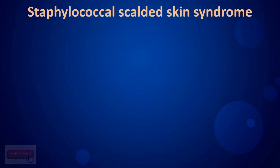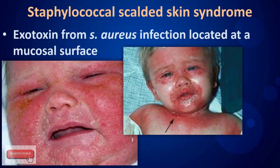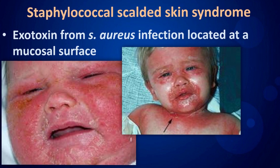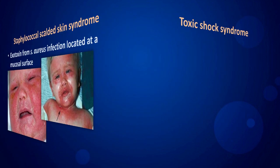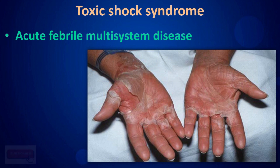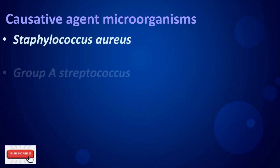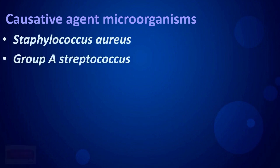Staphylococcal scalded skin syndrome is caused by exotoxin from S. aureus infection located at a mucosal surface. Toxic shock syndrome is an acute febrile multisystem disease; causative microorganisms include Staphylococcus aureus and Group A Streptococcus.